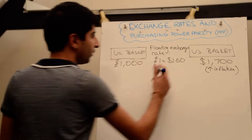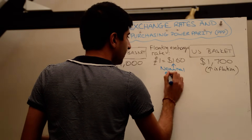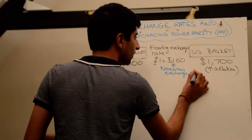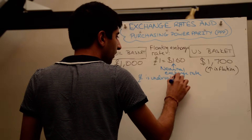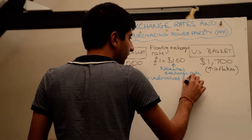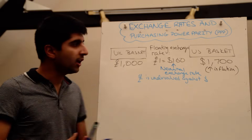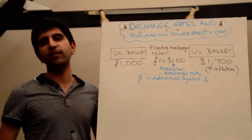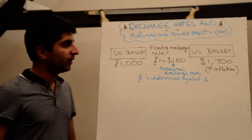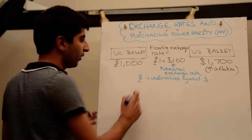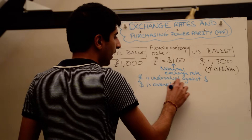According to this nominal exchange rate, the pound is actually undervalued against the dollar. While the pound can buy a certain level of goods and services in the UK, when converted to dollars it can't buy the same level — it can buy actually less than it can in the UK. So the pound is undervalued against the dollar, and vice versa, the dollar is therefore overvalued against the pound.